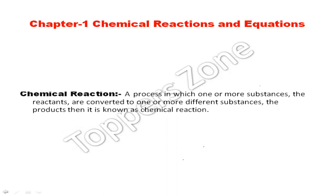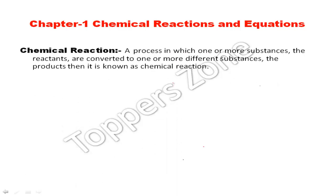What is a chemical reaction? A process in which one or more substances, that is the reactants, are converted to one or more different substances, that is the products, is known as a chemical reaction. One chemical reaction is made up of reactants and products.